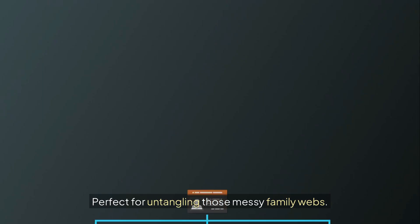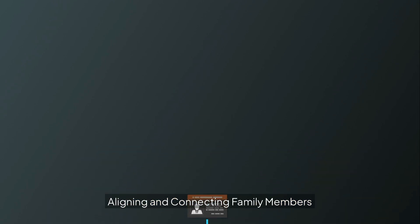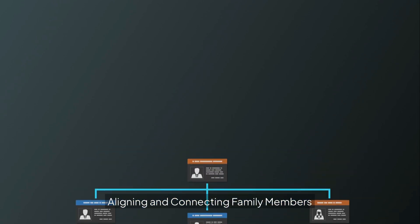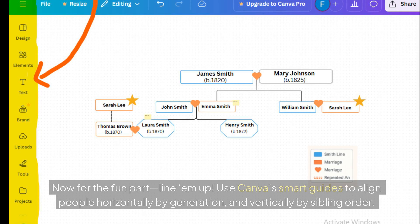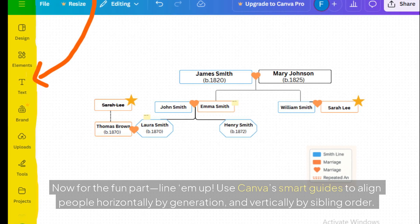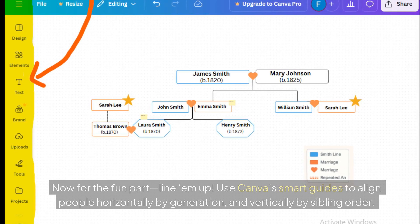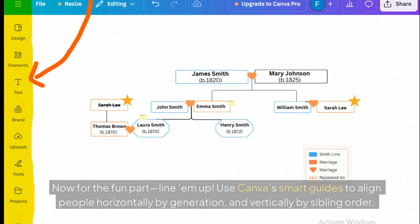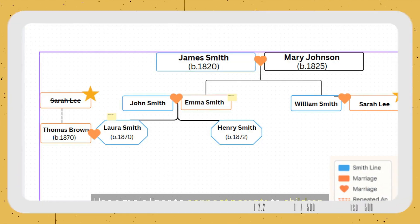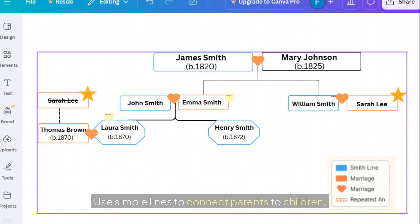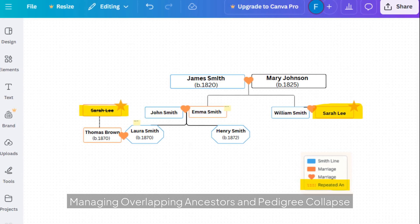Now for the fun part — line them up. Use Canva's smart guides to align people horizontally by generation and vertically by sibling order. Use simple lines to connect parents to children, and then we'll look at managing overlapping ancestors and pedigree collapse.